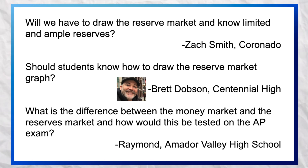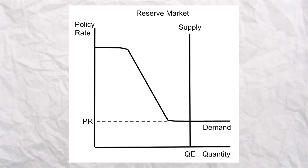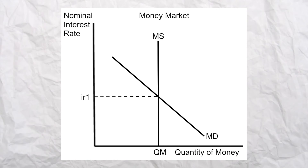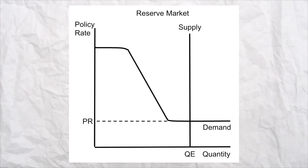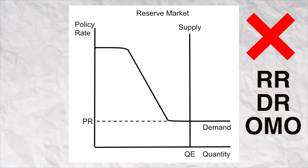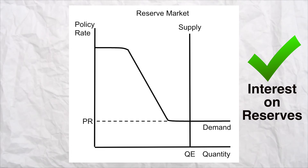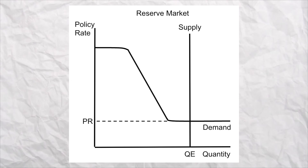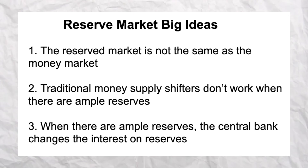The vast majority of questions I got were about the new stuff in the AP curriculum: ample and limited reserves and the reserve market graph. It's really not that hard — just take a deep breath. Here are the three big takeaways. Number one, the reserve market graph is different than the money market graph: the money market shows the demand for money by individuals, while the reserve market shows the demand for reserves by banks. Number two, the effectiveness of traditional monetary policy depends on whether the banking system has ample or limited reserves — if limited, the three tools of monetary policy will work; if ample, those tools don't work. Number three, when there are ample reserves, the central bank changes the interest it pays banks — the interest on reserves — to conduct monetary policy. You might have to draw this graph on the free response this year, but it's more likely you'll see a question on one of these general ideas.